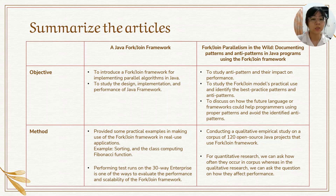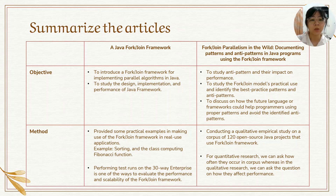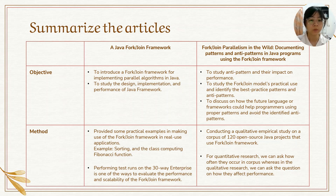The method used in the first article is providing practical examples of making use of the Fork/Join framework in real-use applications. For example, it provides sample code and explanations that demonstrate how to use the Fork/Join framework. Standard examples given include class computing, the permanence function, and sorting. Besides that, performing test runs on a 30-way enterprise system is one of the ways to evaluate the performance and scalability of the Fork/Join framework. In the second article, the method used is conducting a qualitative empirical study on a corpus of 120 open source Java projects that use the Fork/Join framework. To evaluate the performance impact of the anti-patterns, both quantitative and qualitative research were performed.